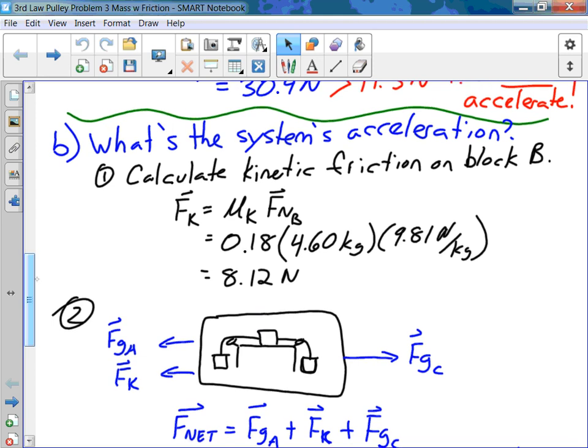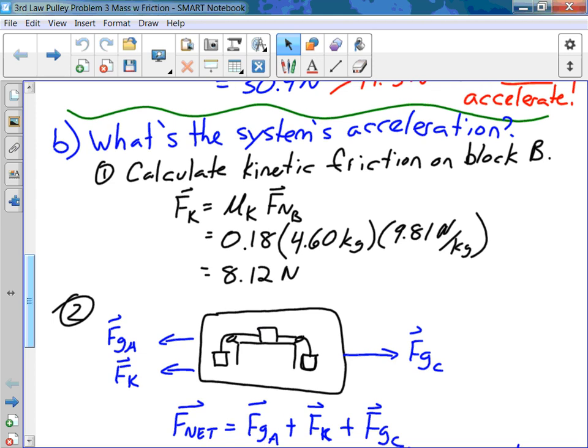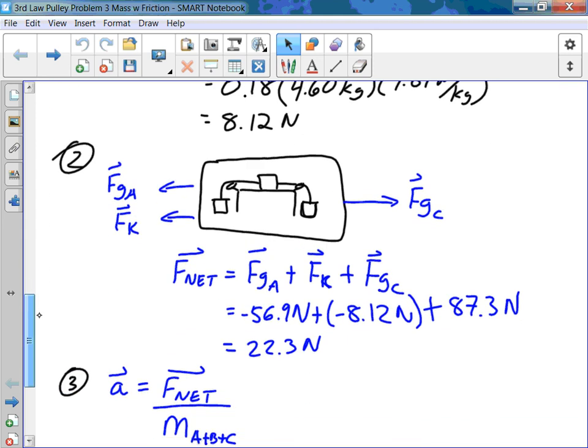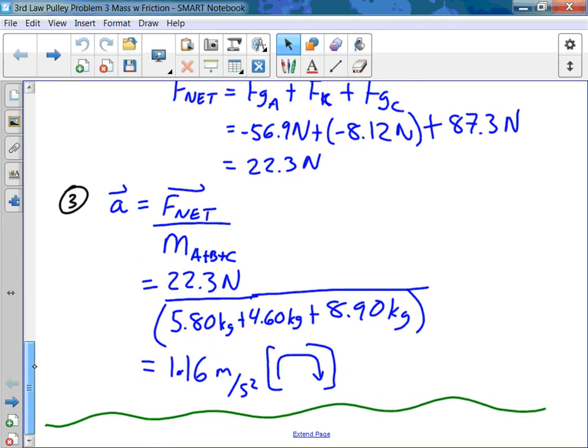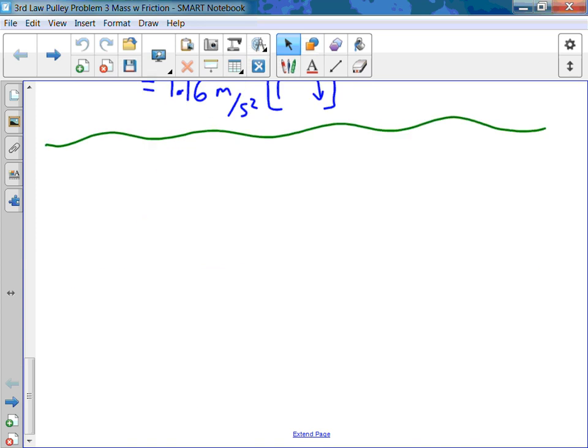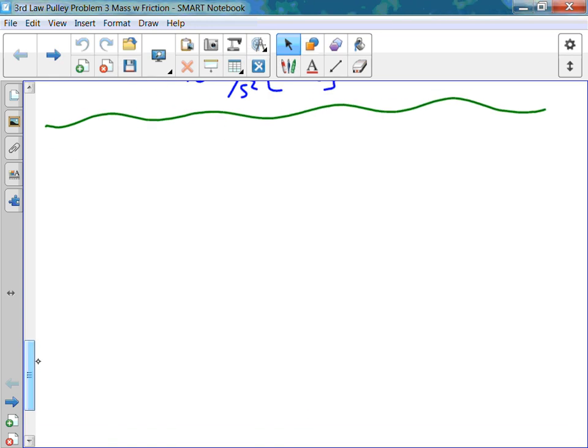After we figured that out, part B, we actually had to calculate the system's acceleration, so we worked out the net force and divided the net force by the total mass of the system to get the acceleration of 1.16 meters per second squared. And now part C, the thrilling conclusion to this question.